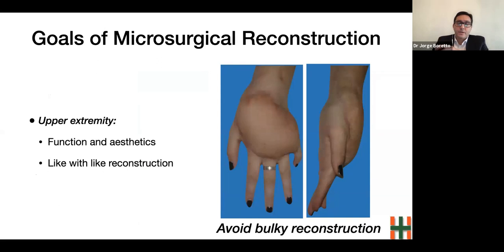The goal of reconstruction in the upper extremity is to restore not just the function, but also, when possible, the aesthetics. Microsurgical techniques allow for reconstruction with the principle of like-with-like, meaning the different tissues could be replaced by the same tissues.